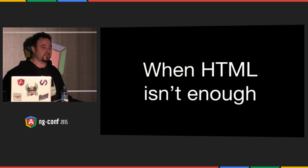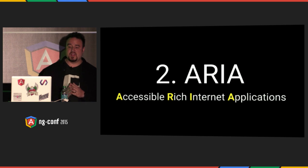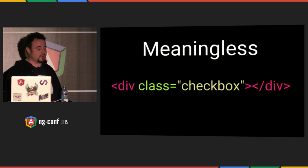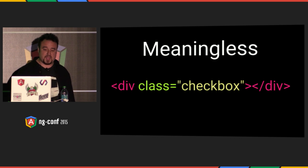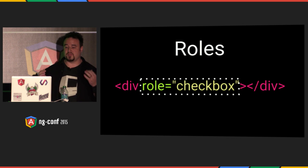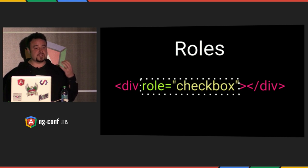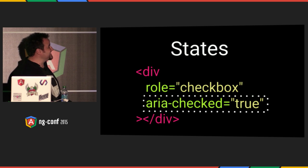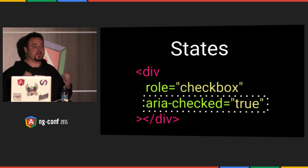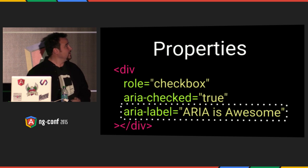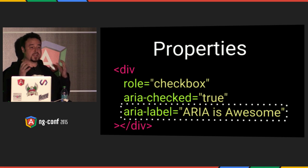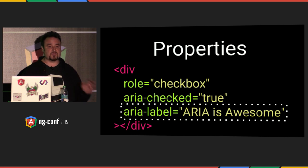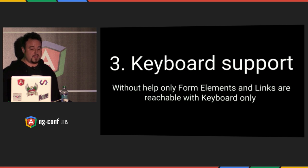We live in a web components world, and HTML might not always be enough, so we extend it with ARIA — Accessible Rich Internet Applications. We can take a completely meaningless div, change the class to a role, and suddenly have something meaningful that not only looks and smells like a checkbox, but is announced as such. By adding an ARIA state — ARIA checked equals true — we have a checkbox with meaning about whether it's checked or not. We also add properties like ARIA label, which fills the gap of a regular label. You can only apply regular labels to form elements, but in web components you're building everything new, so ARIA label applies to everything — no excuse not to label anymore.